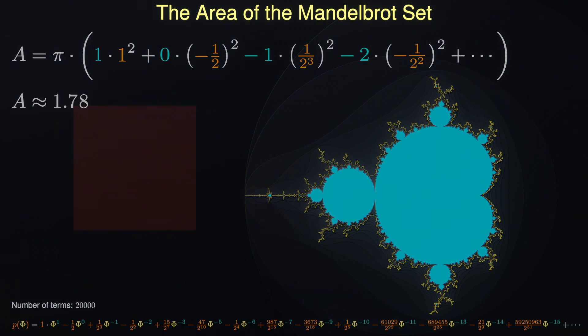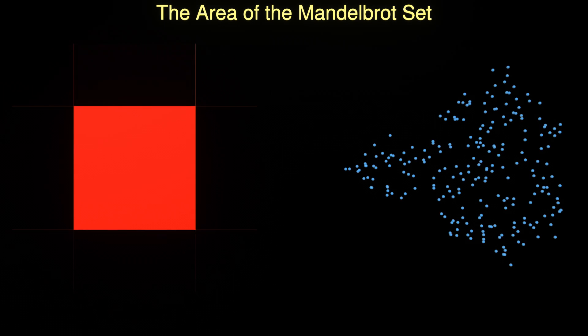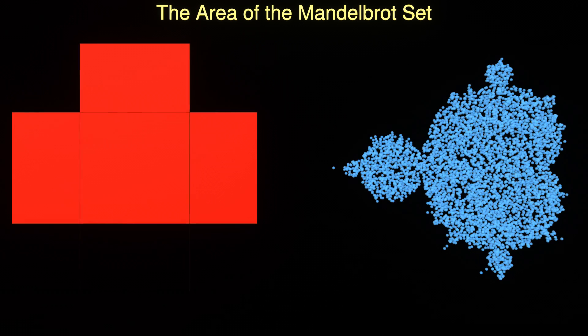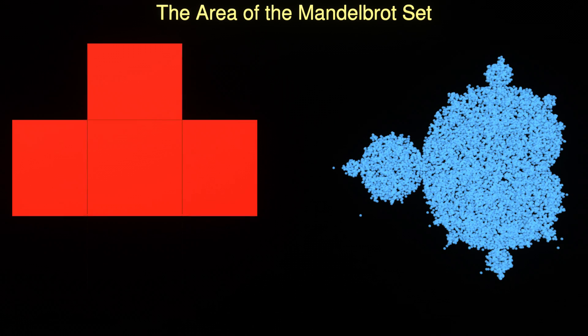But here is the big question. How is it possible that we can determine the area of the Mandelbrot set at all when we are only working with the Fourier coefficients of its boundary?